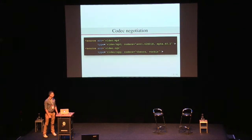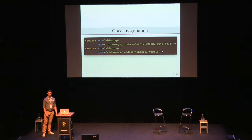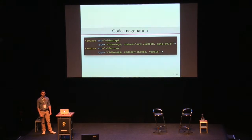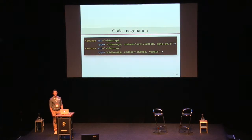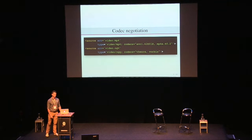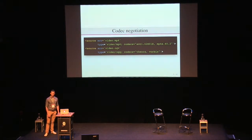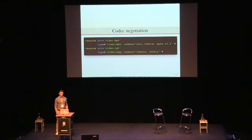What does codec negotiation mean? If you have a video file, it will typically have a stream of video and a stream of audio, both encoded in a particular codec and then put in a container format. For instance, H.264 and AAC in an MP4 container, or Theora and Vorbis in an Ogg container. These were the formats supported at the time but by different browsers. So to let the browser download only the file it supports, you could use the source element with the source and type attributes, specifying the codecs in a parameter in the MIME type.